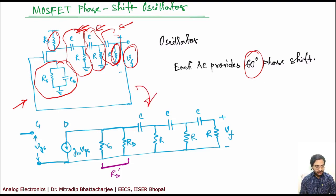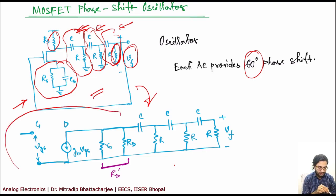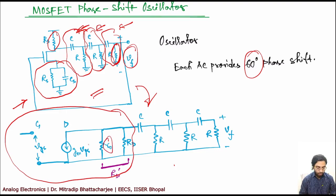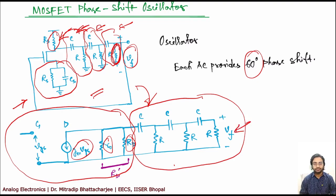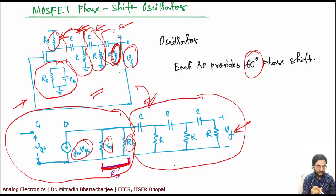The equivalent circuit associated with this RC network has the MOSFET model where Ro is the output resistance, gmVgs is the current source, and Rd is the load used in the biasing network. The phase shift network is connected to this, and the voltage across the final resistor is Vf. We can treat the parallel combination of Ro and Rd as Rd' for simplicity.